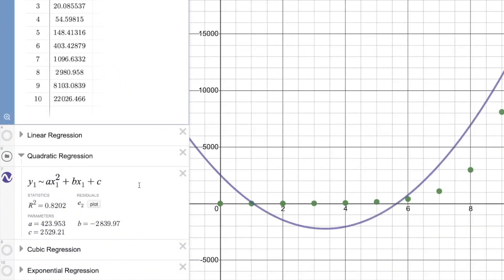When we turn this one on, we're going to see that we have y1 tilde ax1 squared plus bx1 plus c. Notice those subscript ones still have to be there, because that's going to use the data from up above in our table with the x1 column and the y1 column. But this time,